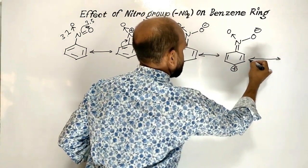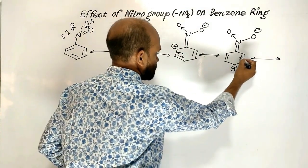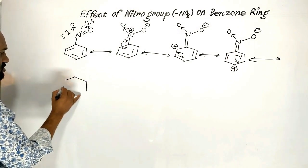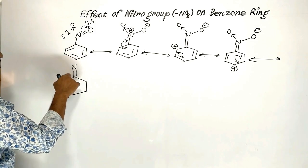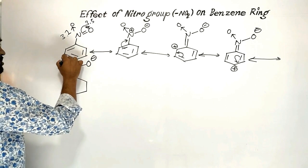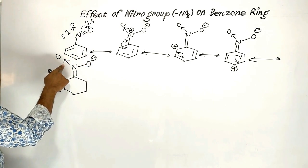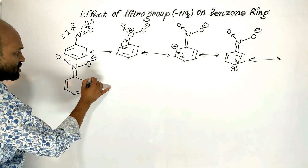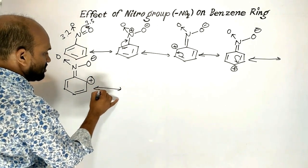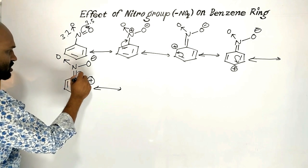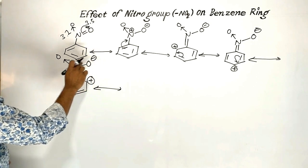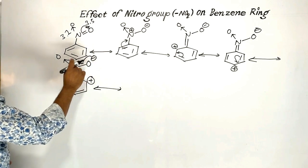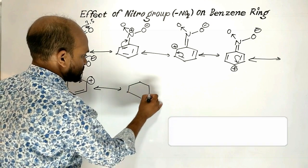Again, because of the positive charge on the para carbon, the pi bonded electrons move back, and this ortho carbon gets positively charged. With a carbon-nitrogen double bond and oxygen negatively charged, because of this positive charge the pi bonded electrons move further, and nitrogen becomes positively charged again. These electrons then move to reform the nitrogen-oxygen double bond.